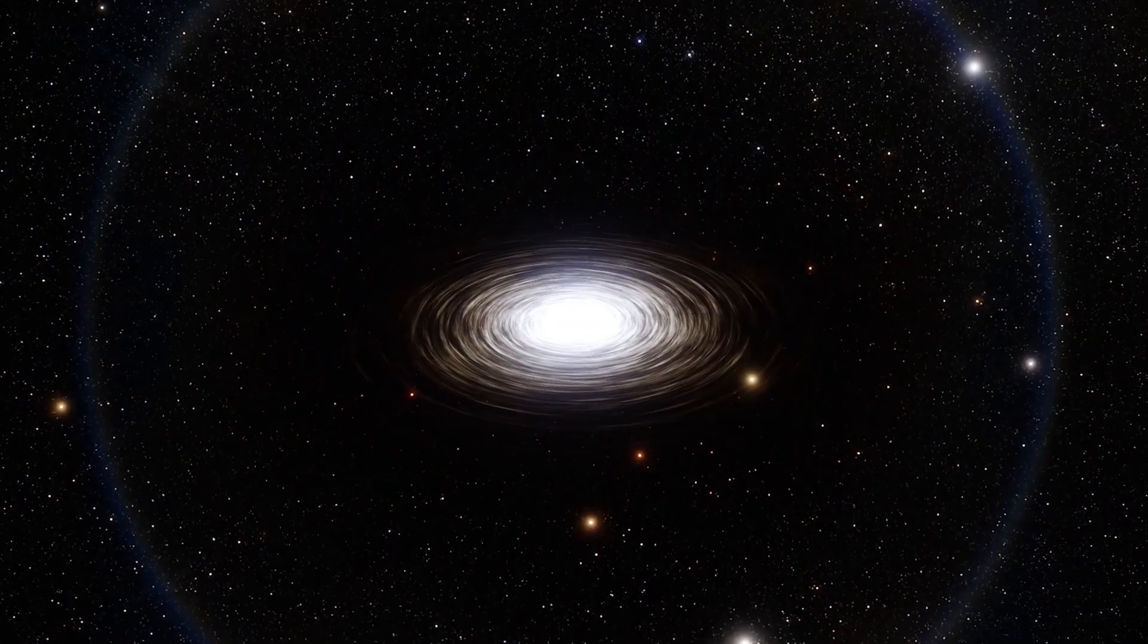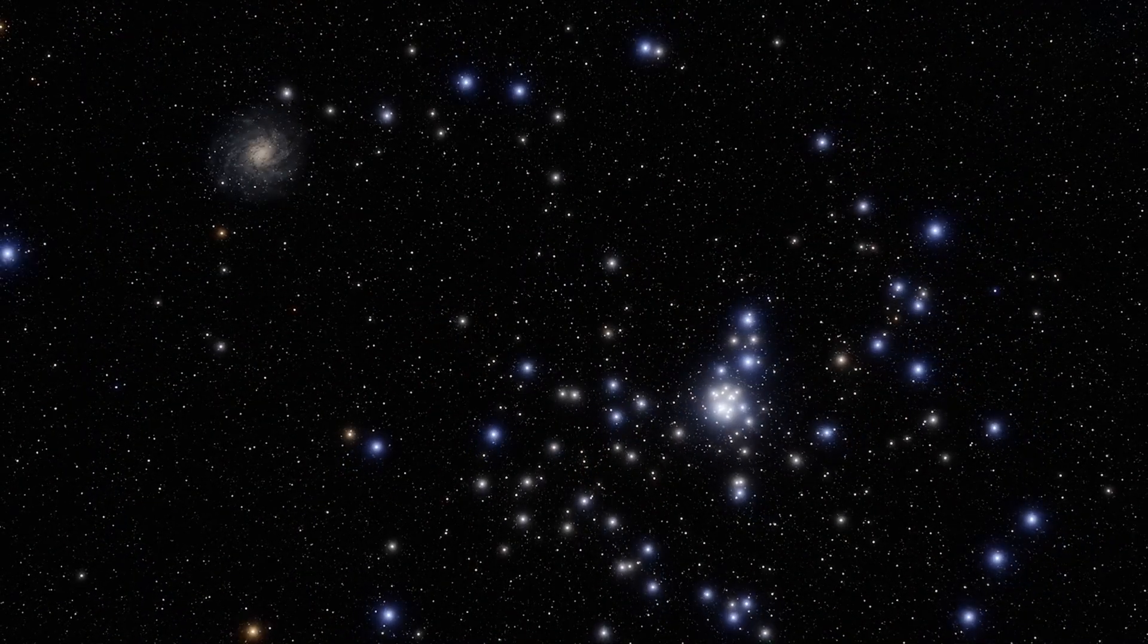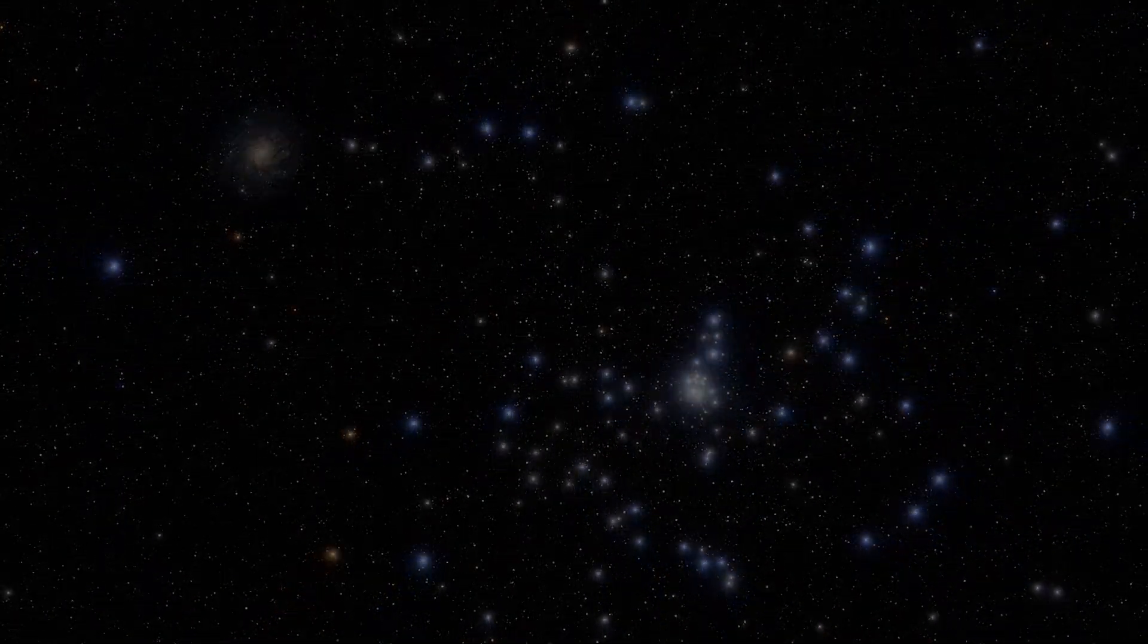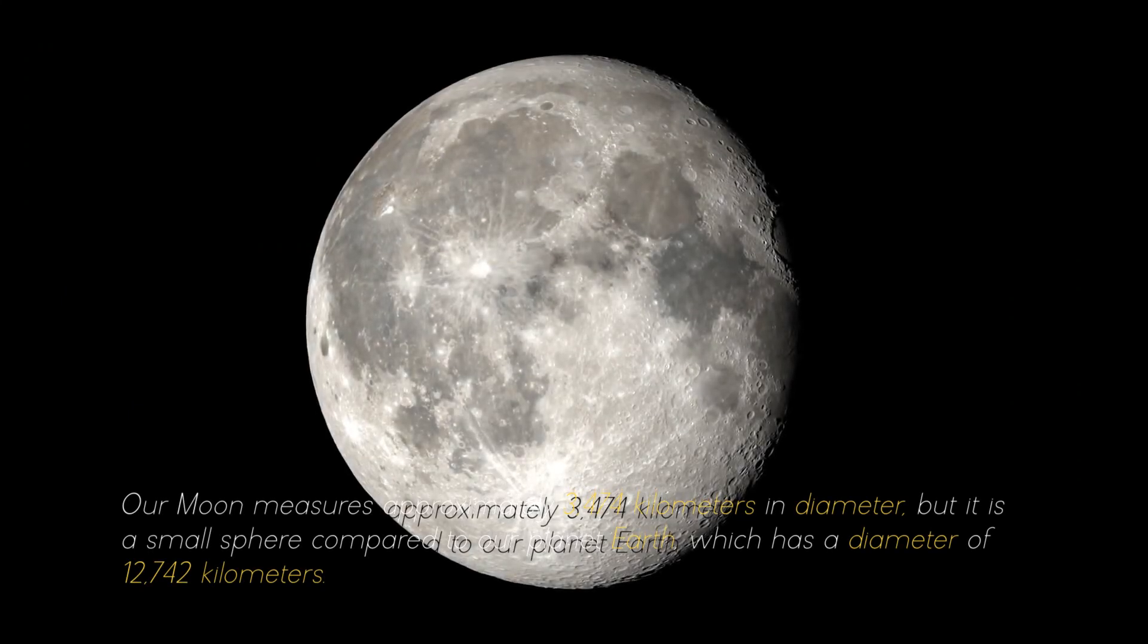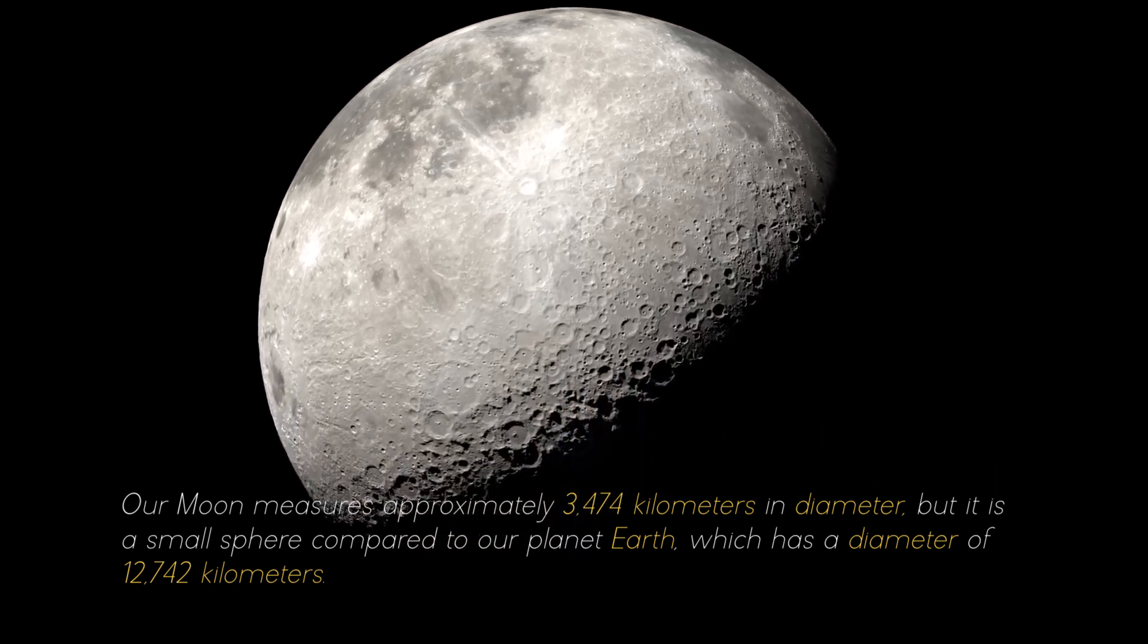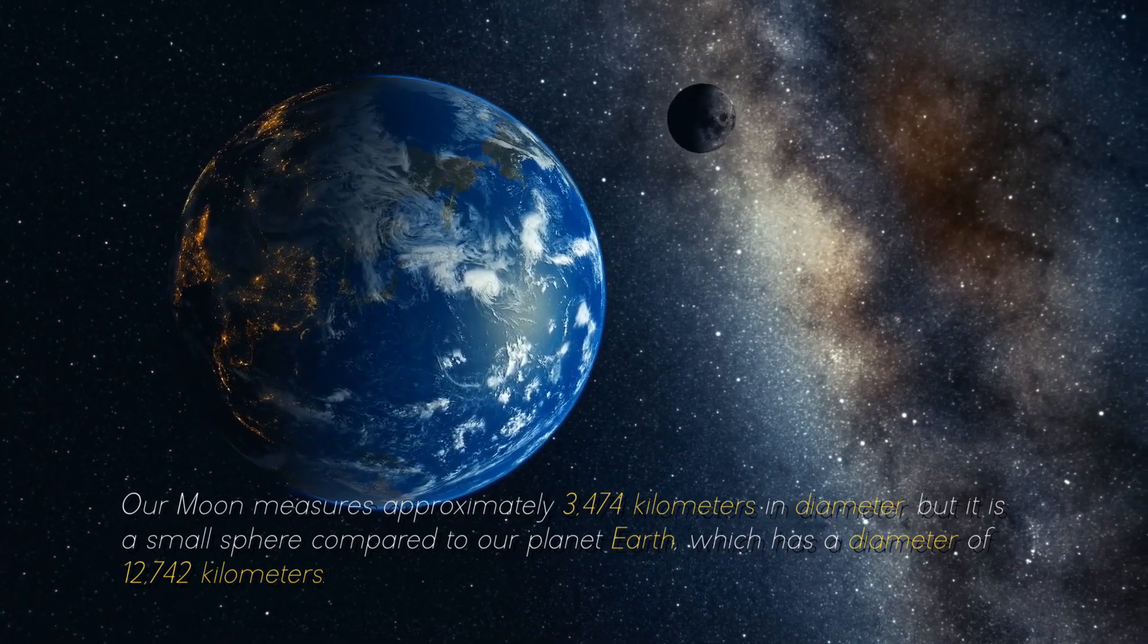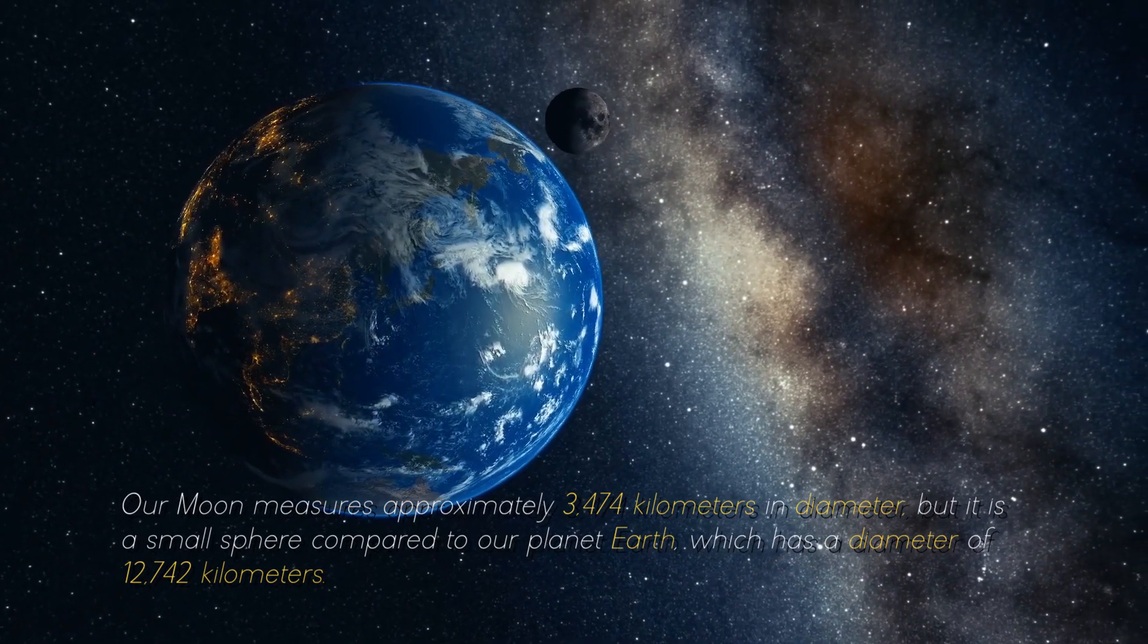To give you an idea of the colossal objects and structures that abound in the cosmos, it is necessary to start at the beginning. Our moon measures approximately 3,474 kilometers in diameter, but it is a small sphere compared to our planet Earth, which has a diameter of 12,742 kilometers.